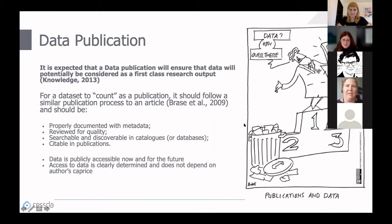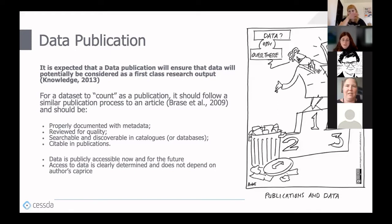A data publication is the goal for each researcher who is collecting data. If you want to produce a proper data publication, your data should go through a similar publication process as an article: it should be properly documented with metadata, reviewed for quality, searchable and discoverable in catalogs or databases, and citable in publications. This kind of data publication is publicly accessible now and for the future.